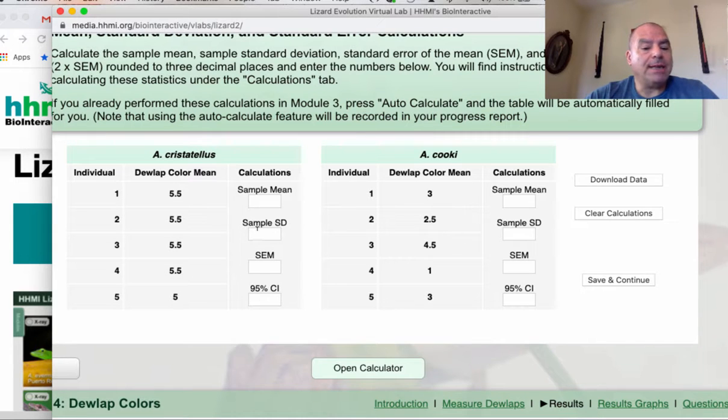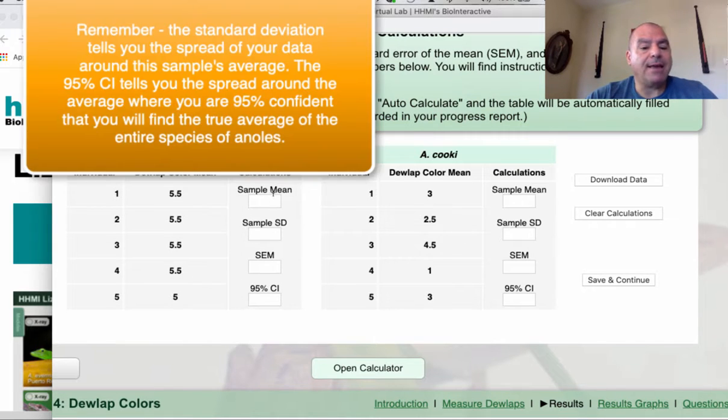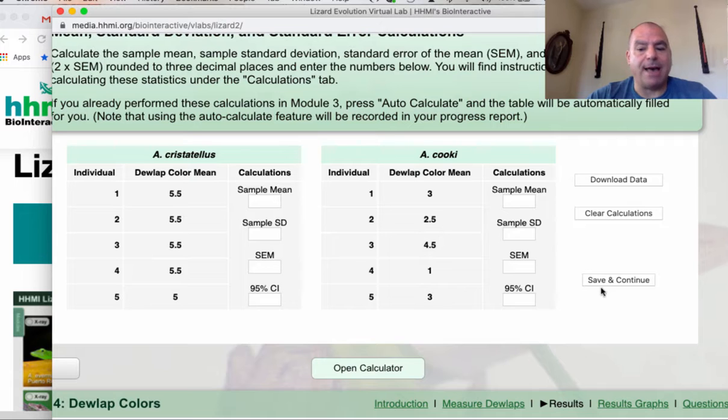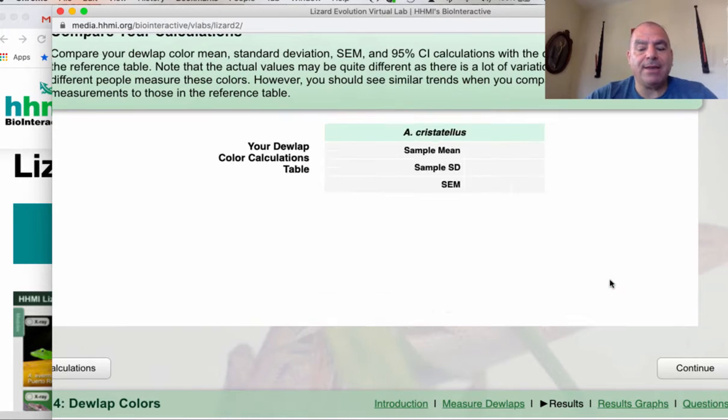Now, the only thing you need to calculate is the average. You don't need to worry about the standard deviation or the 95% confidence interval. So when you see this table, you can put your average in there. You don't have to, but you should calculate it. Click save and continue.